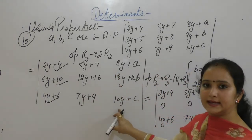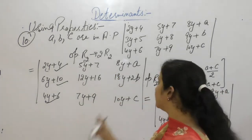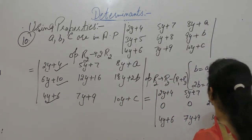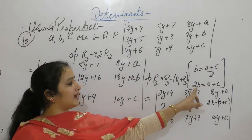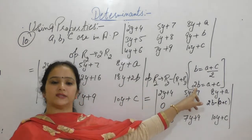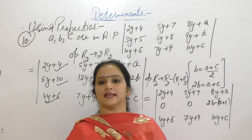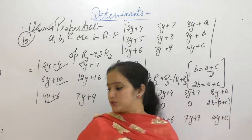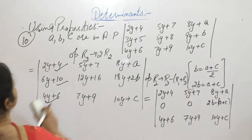8 plus 10 gives 18Y, and 18Y will get cancelled, leaving 2B minus A plus C. We have stated that 2B has the value A plus C, so substituting gives 2B minus A plus C equals 0. So this element is also 0.